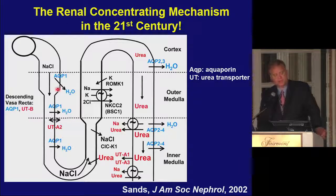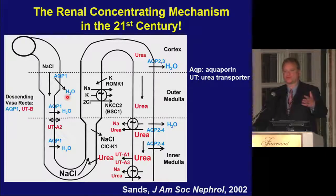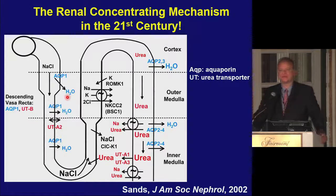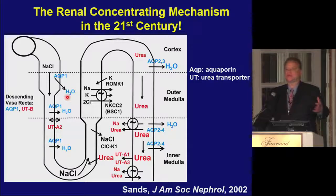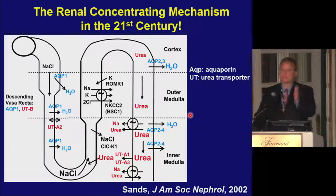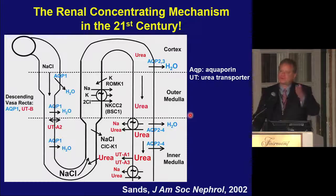There's an interesting story about the aquaporin-1 channel. When it was cloned, it was found to be in red cells as a transfusion antigen missing in some people. Those people seemed phenotypically normal, but when the mouse knockout phenotype emerged, researchers wondered if these people had a concentrating defect. Indeed, those patients never go far from a gallon of water because they have a congenital, significant nephrogenic DI. In the thick ascending limb, the Na-K-2Cl cotransporter separates electrolytes from water — a water-impermeable segment — which is key to the countercurrent multiplier.